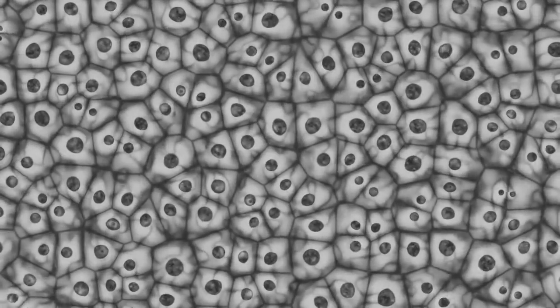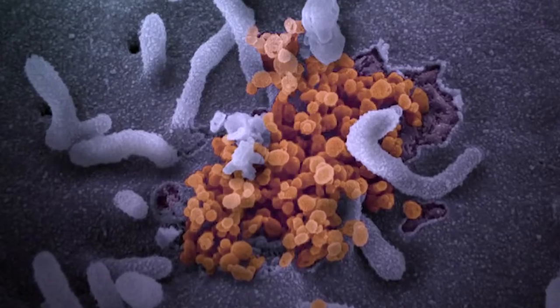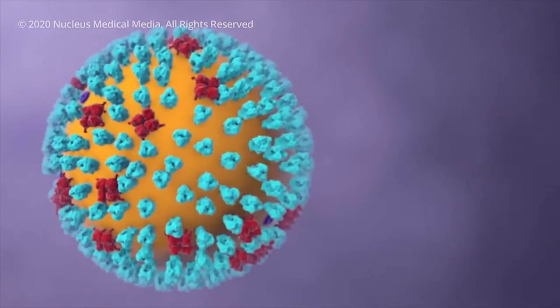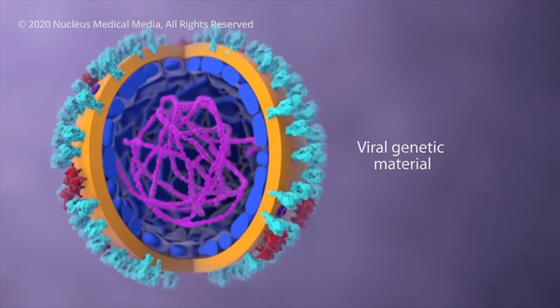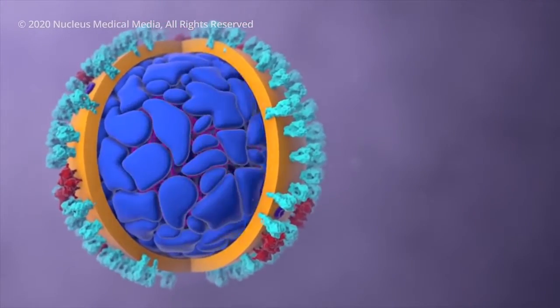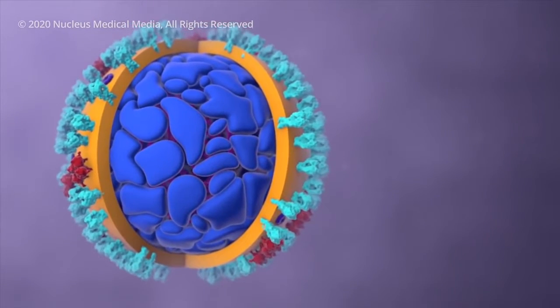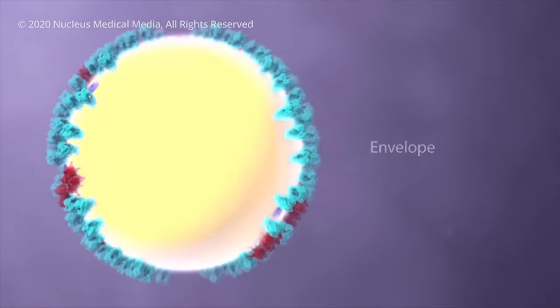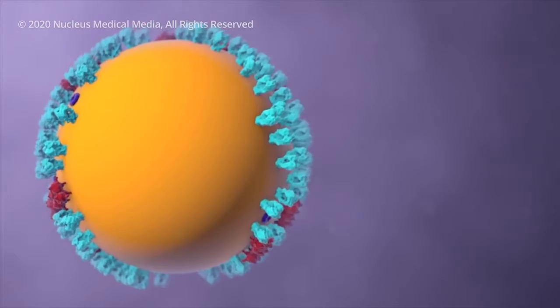The coronavirus must infect living cells in order to reproduce. Let's have a closer look. Inside the virus, genetic material contains the information to make more copies of itself. A protein shell provides a hard protective enclosure for the genetic material as the virus travels between people. An outer envelope allows the virus to infect cells by merging with the cell's outer membrane.